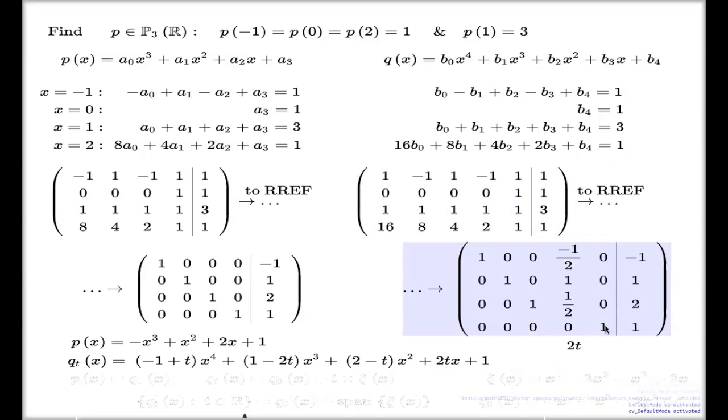Here we go. Right from the matrix, the last coefficient b4 is 1. Here it is. The b3 is simply parametrized by double T. B2, from this line, you solve for it. It's 2 take one half of double T. That's why that's the b2.